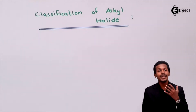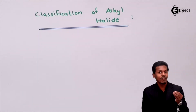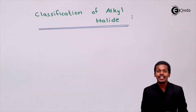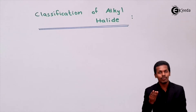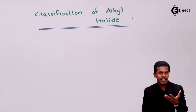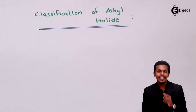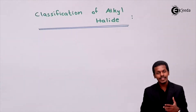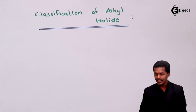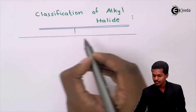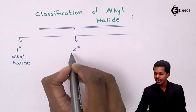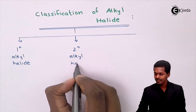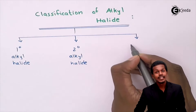The classification of alkyl halide depends on the type of carbon atom to which the halogen atom is attached — primary, secondary, tertiary, or quaternary. Depending on that, the alkyl halides are classified into three types: primary alkyl halide, secondary alkyl halide, and tertiary alkyl halide.